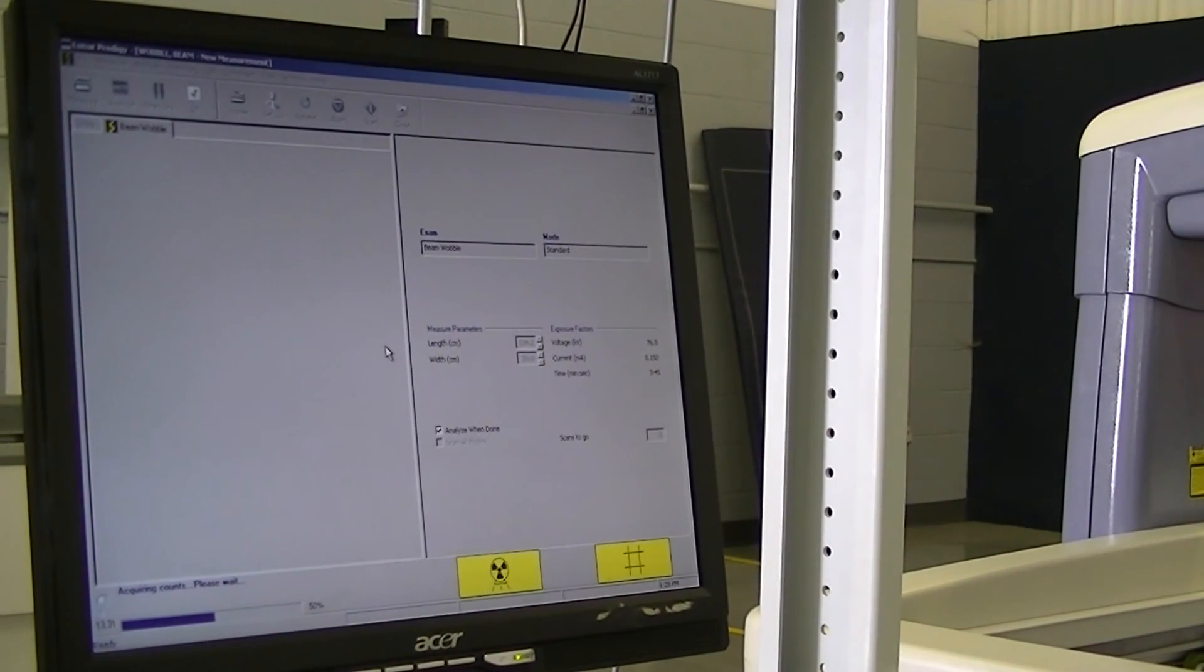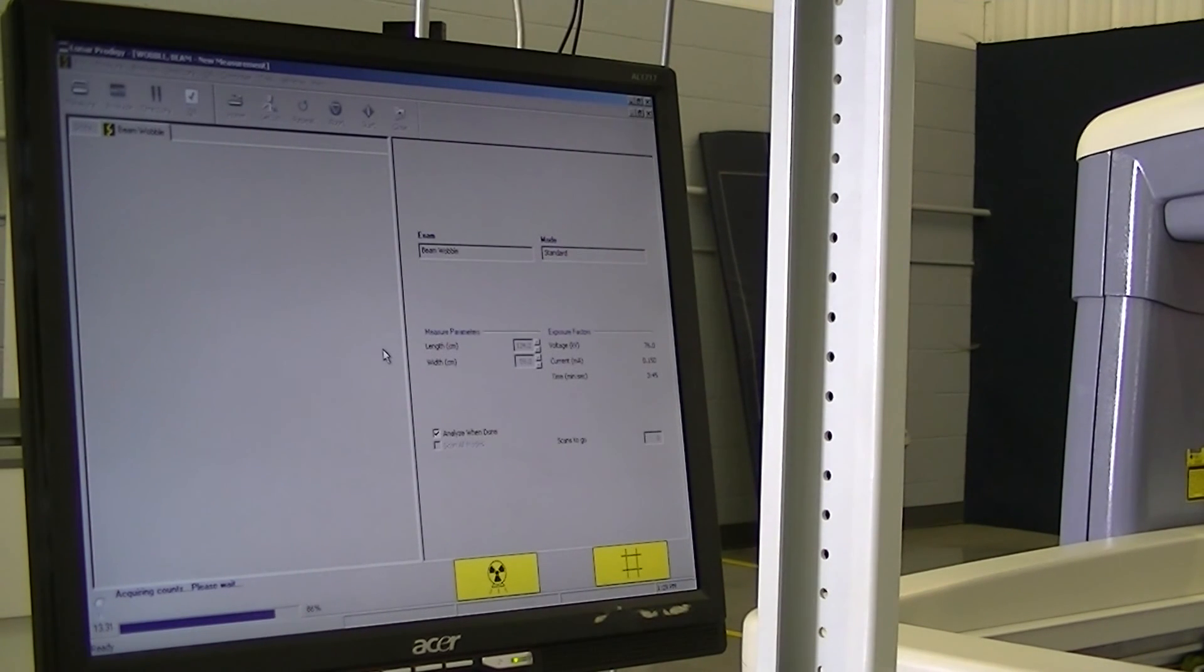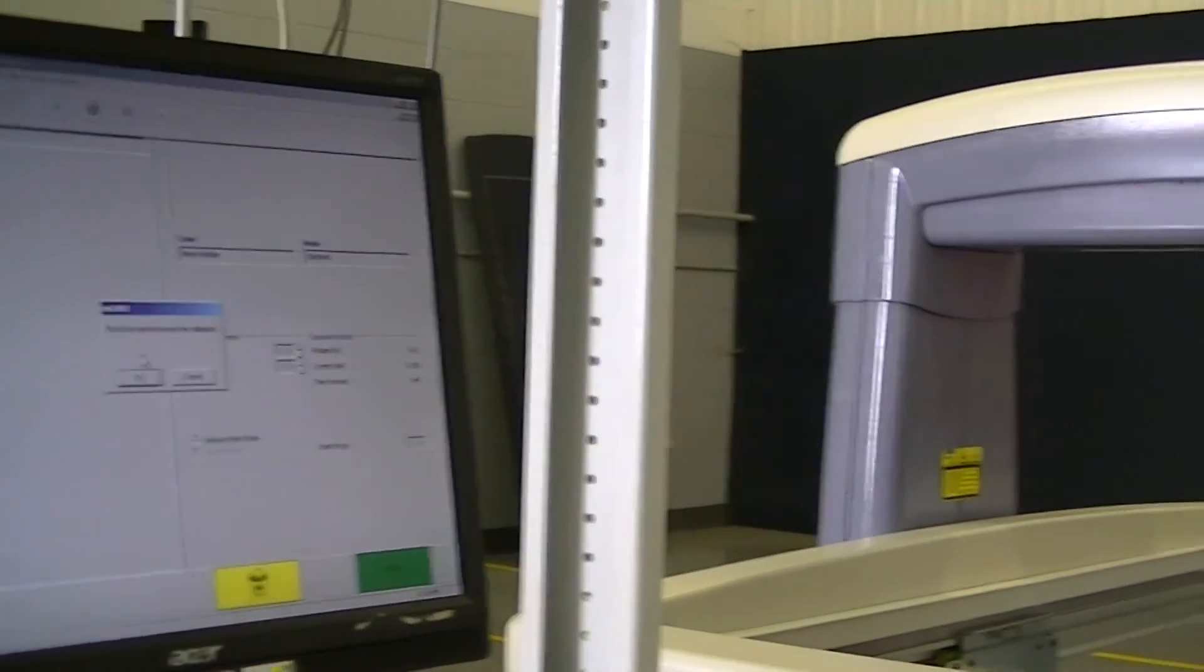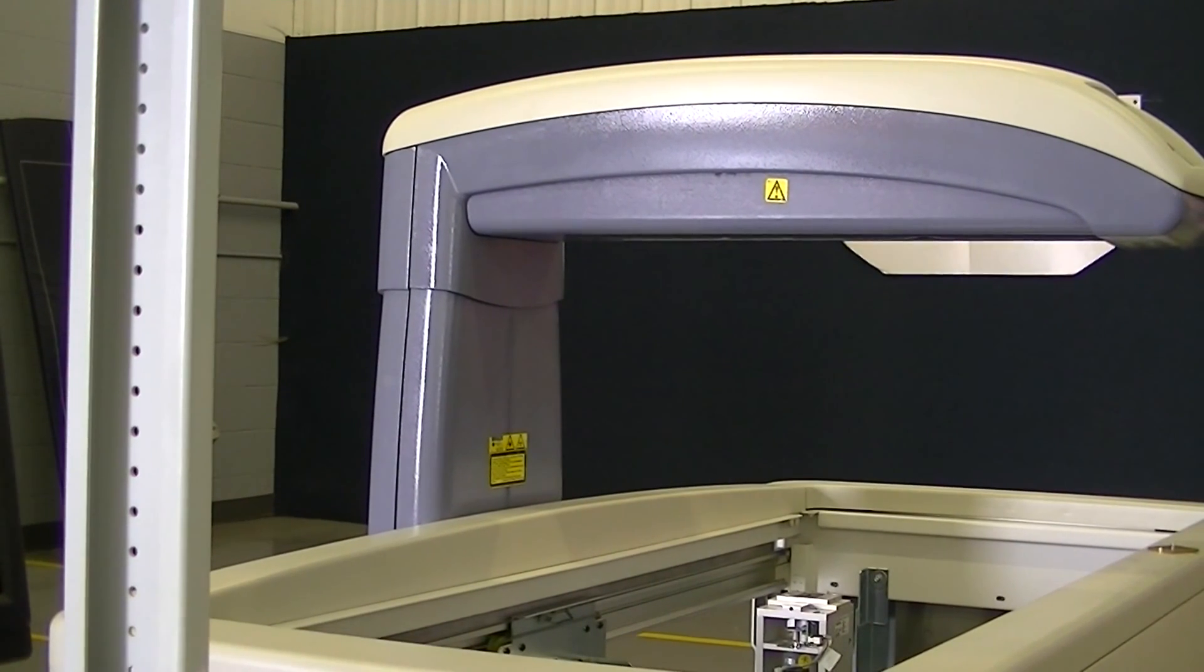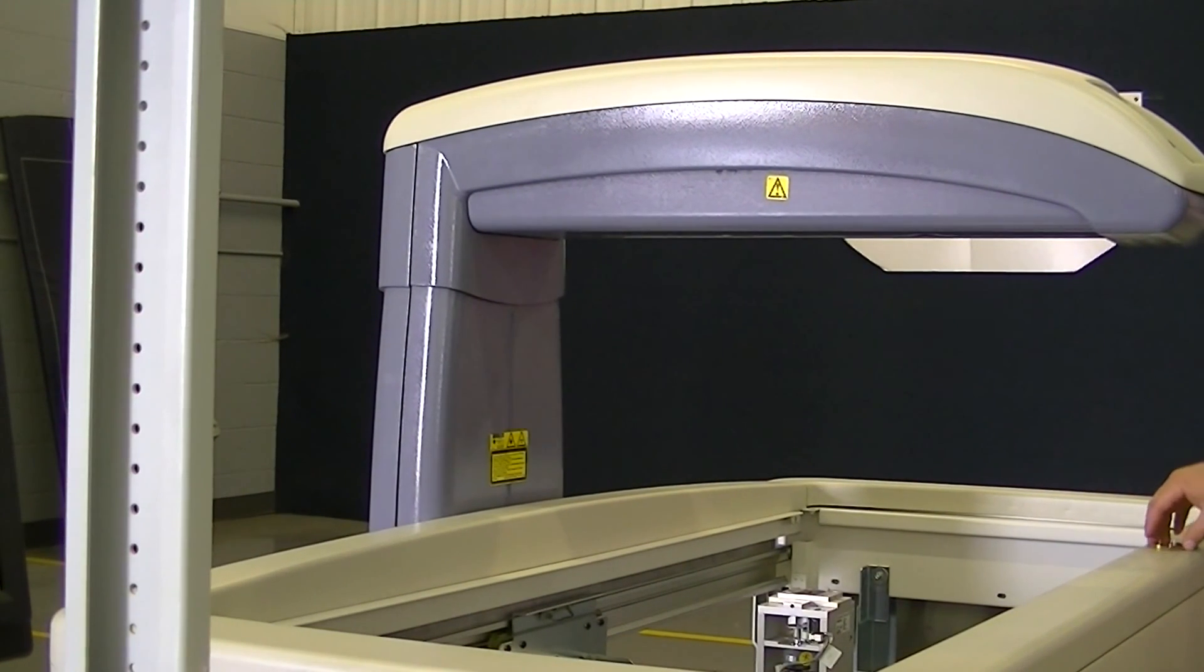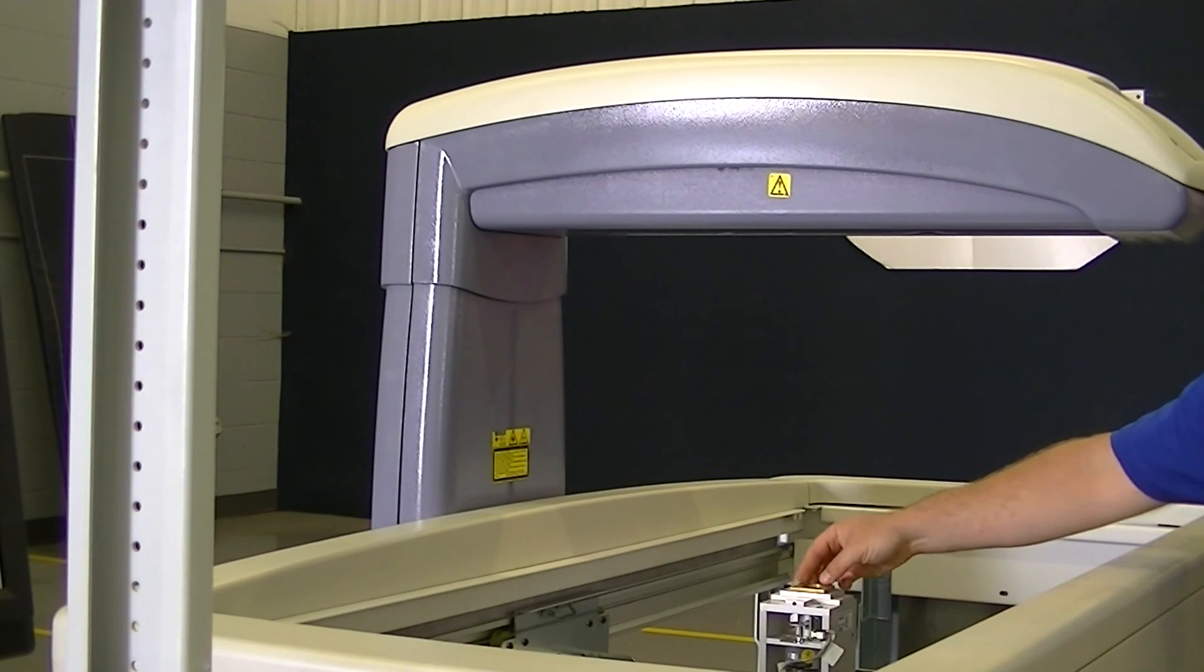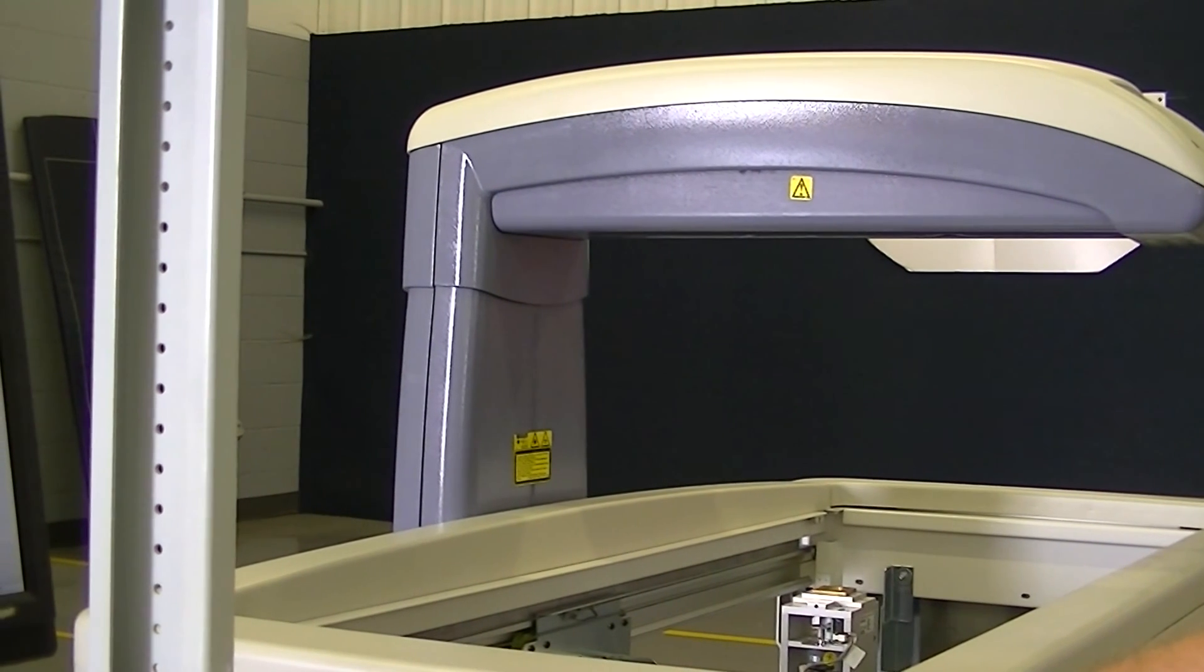The x-ray is ramping. An error will come up and tell us to put the aperture in place. There it is, so we want to put the aperture over the collimator, then hit OK, and the test will begin.